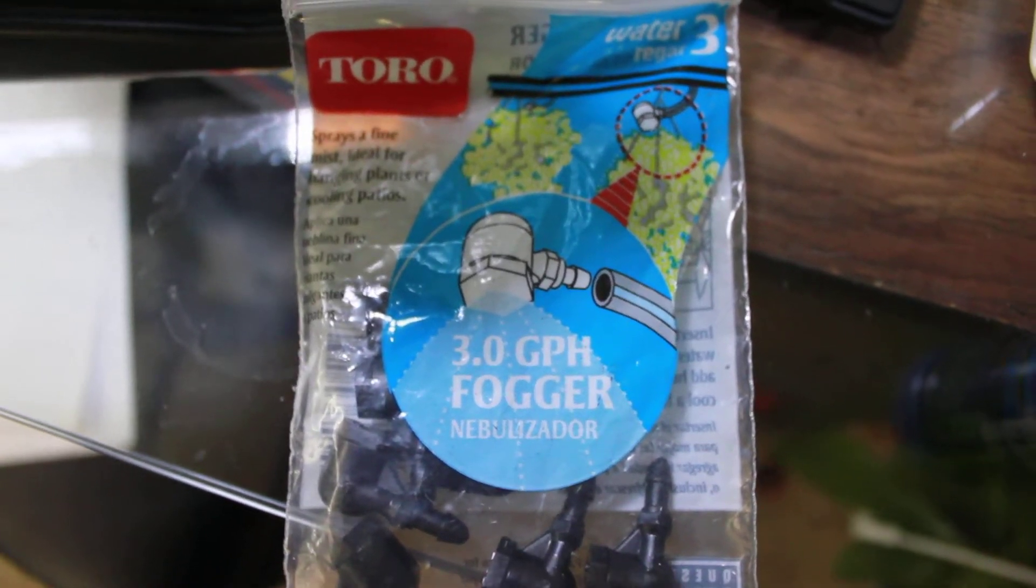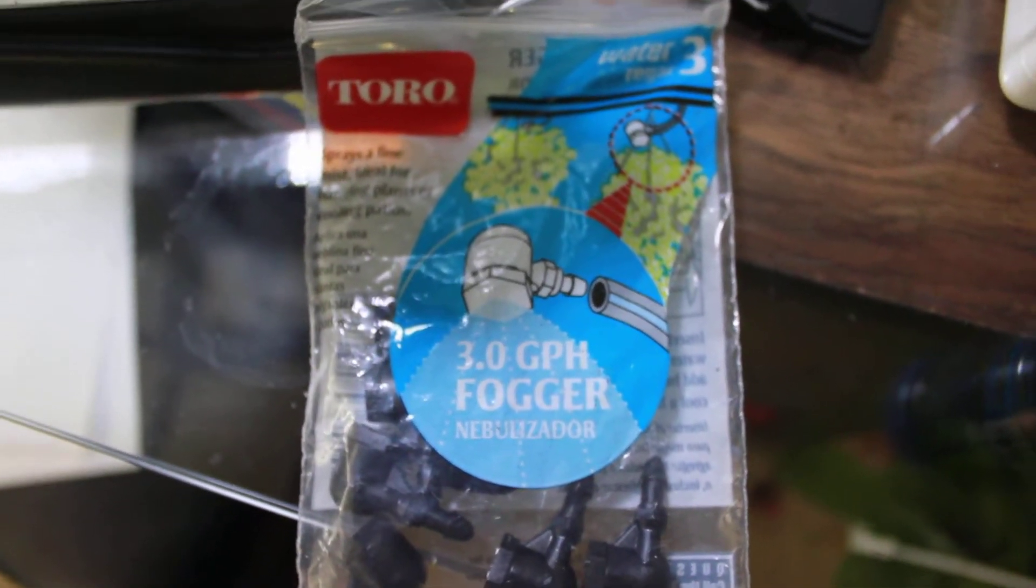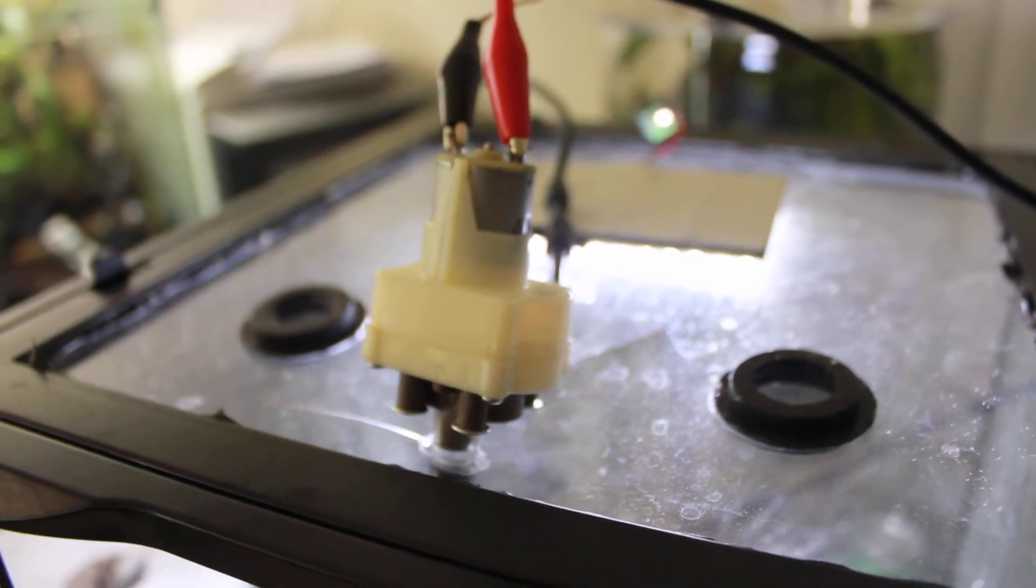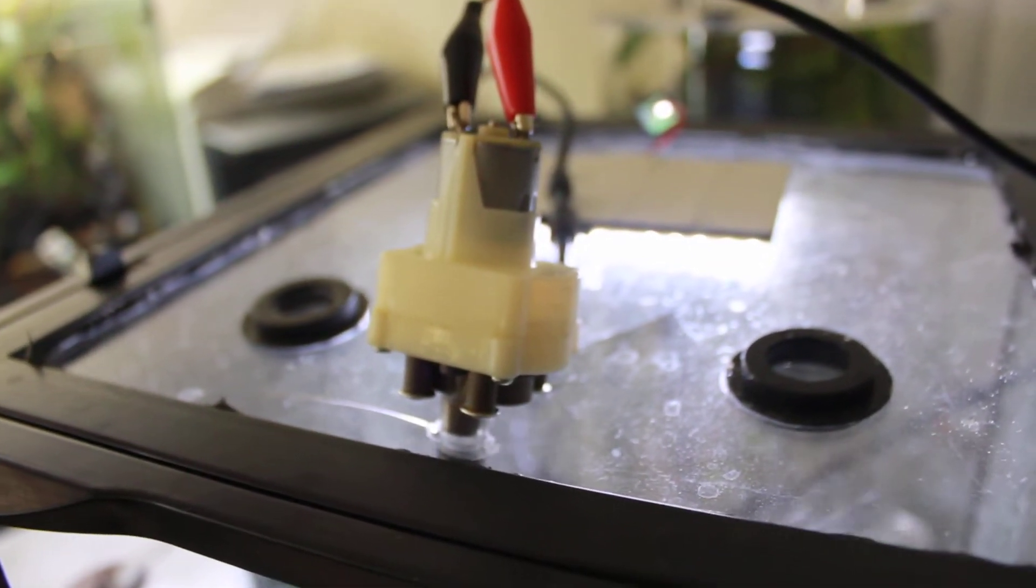So here I'm testing out these three GPH foggers here I got at Home Depot on a 12x12x18. And here you can see at the top I've connected it to a 6-volt motor from an electric sprayer.